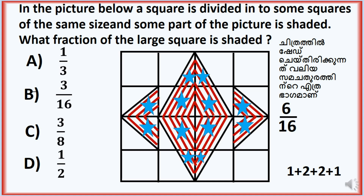That is 6 squares: 1 plus 2 plus 1 equals 6. So 6 by 16. If we divide the numerator and denominator, the answer is 3 by 8.